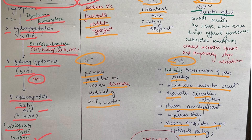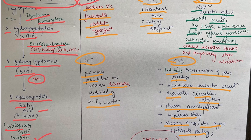In the kidney, serotonin has a mild diuretic effect. It prevents diuresis by decreasing GFR, which occurs due to afferent glomerular arteriolar constriction. It also causes ureteric spasm and temporarily stops urination. That concludes the overview of serotonin.